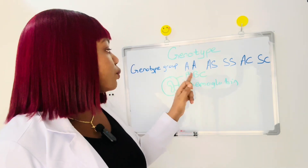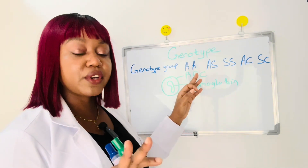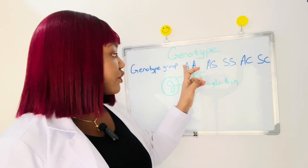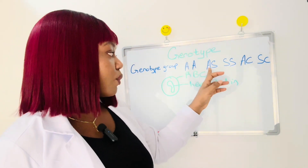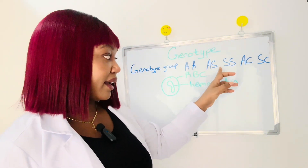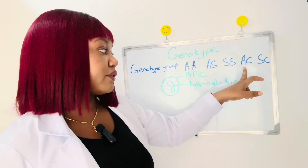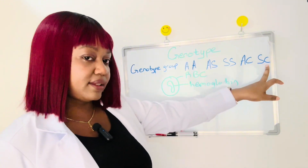There are five different types of genotype groups. You have AA, AS, SS, AC, and SC.